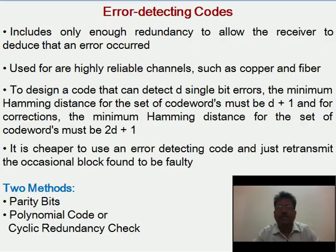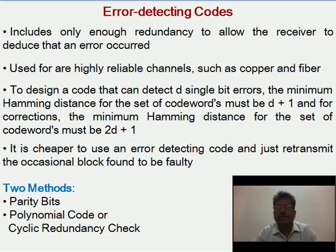How do Error Detecting and Error Correcting Codes work, and what is their cost? Error Correcting Codes include a large number of redundancy bits, while Error Detecting Codes include only enough redundancy bits to allow the receiver to deduce that an error occurred. This mechanism is used for highly reliable channels such as copper and fiber.